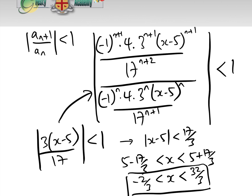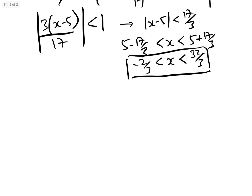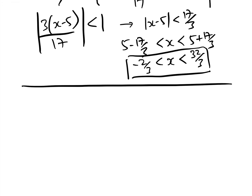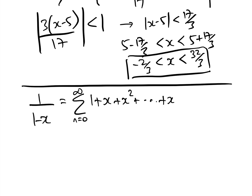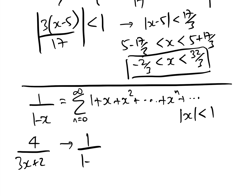Why does the trick work? It works because we are using the fact that 1 over 1 minus x equals the sum from n equals 0 to infinity of 1 plus x plus x squared plus x to the n — the infinite geometric series. We know the geometric series converges as long as the modulus of x is less than 1. So we get 4 over 3x plus 2 in the form 1 over 1 plus or minus something, and then just require that something to have modulus less than 1.